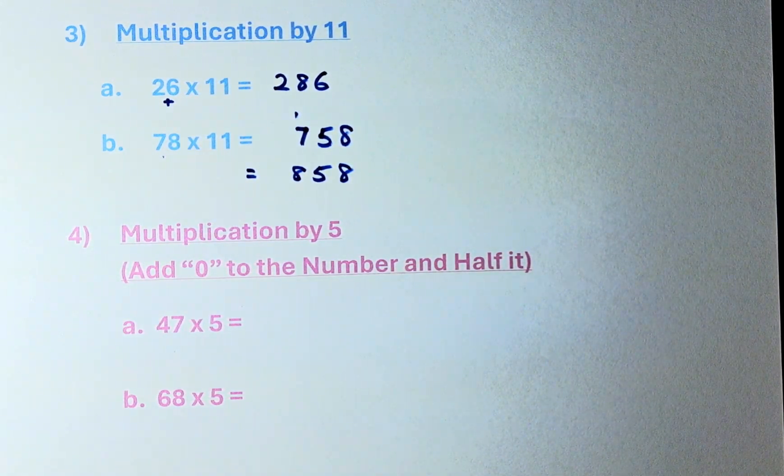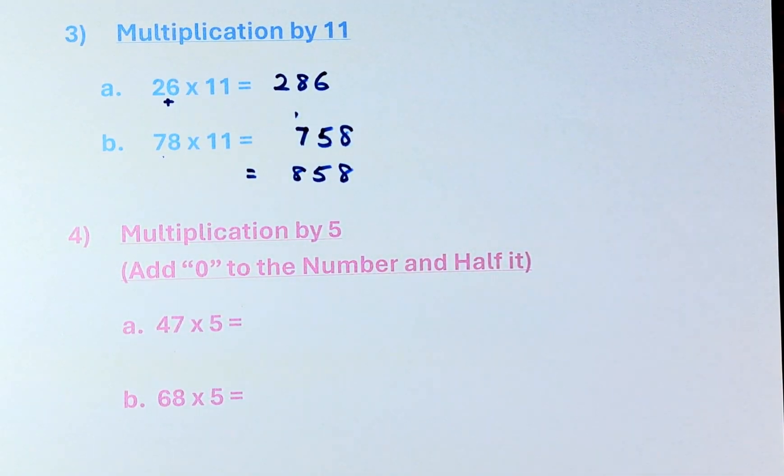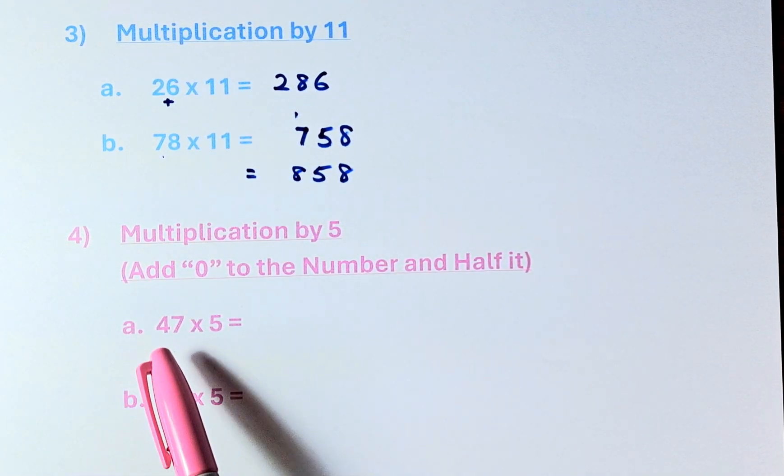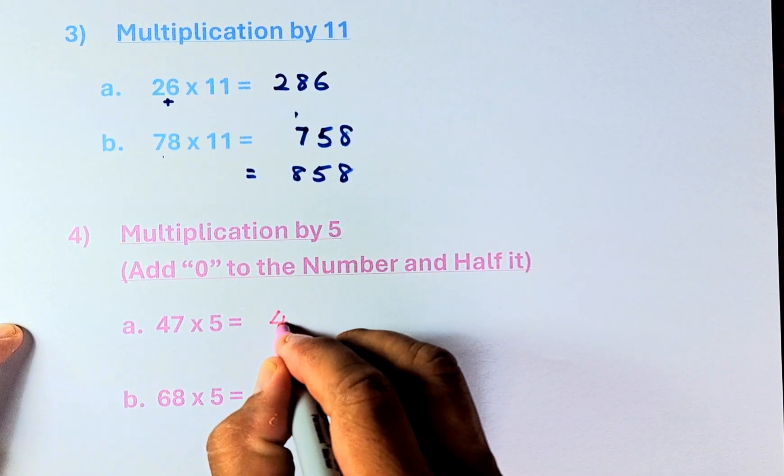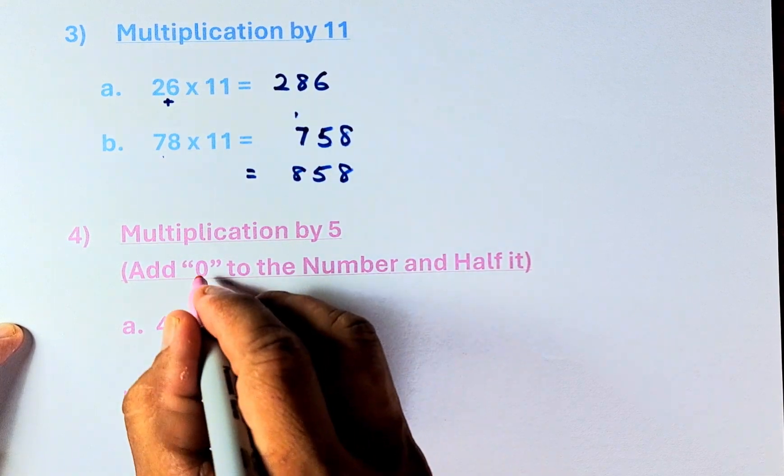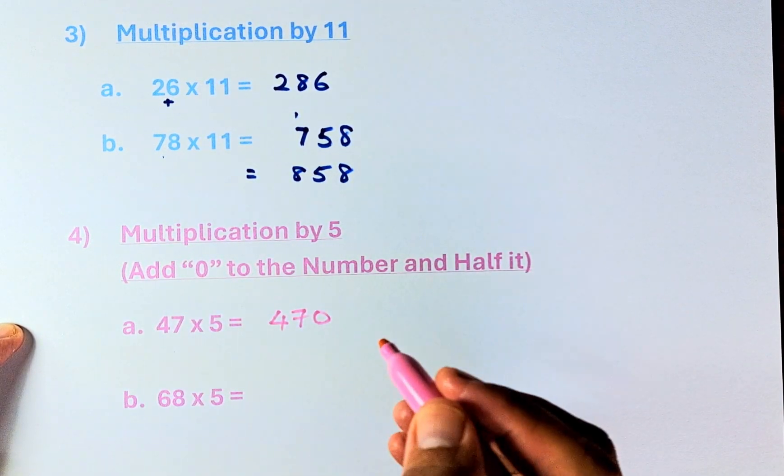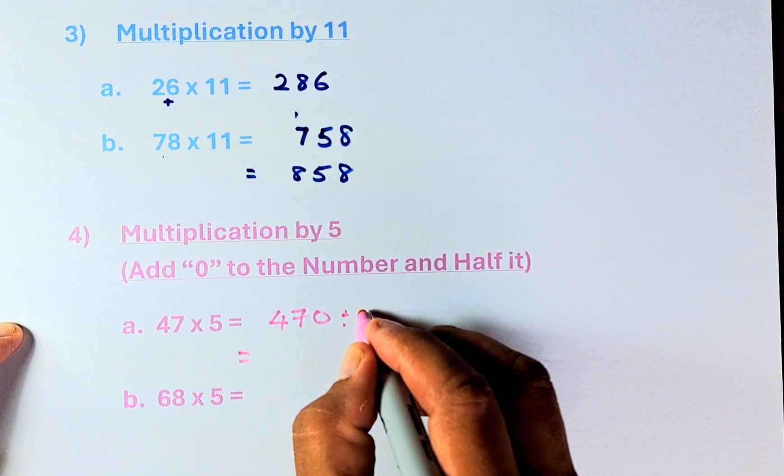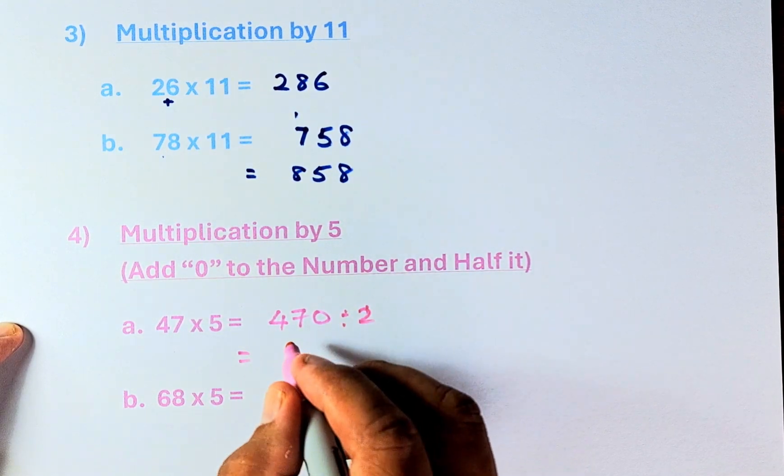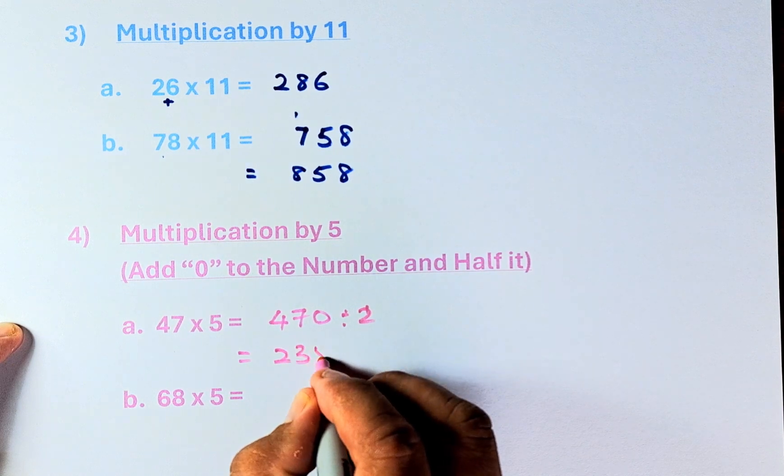So now we are doing question 4. Multiply by 5. When you multiply by 5, what happens is that you add 0 to the first number, and you half the answer. So 47 times 5, the answer is going to be 470, because you put a 0 in there. And then you're going to divide by 2 or half the answer. It's going to be 235.